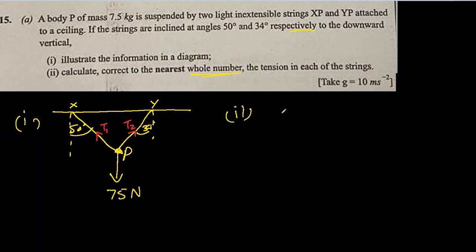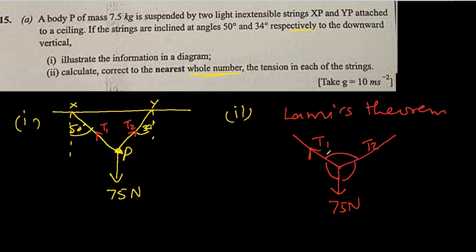In Lami's theorem, let's draw them again: this is t1, this is t2, and this is 75 newtons. For Lami's theorem I need the angles between forces. Let me draw a vertical line here - this is 50 degrees, so this angle is also 50 degrees. This is 34, so this angle will be 34 again because they are alternate angles. So 50 plus 34, this angle becomes 84 degrees.